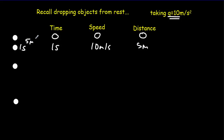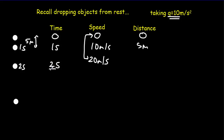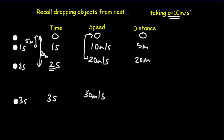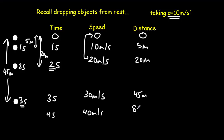So after one second the distance is 5 meters. At 2 seconds, the speed should be 20 meters per second, and the average speed halfway between 0 and 20 is 10 meters per second. Traveling at 10 meters per second for 2 seconds gives 20 meters. For the third second, speed is 30 meters per second, average speed is 15 meters per second, giving 45 meters. And for 4 seconds, we get a speed of 40 meters per second and a distance of 80 meters.